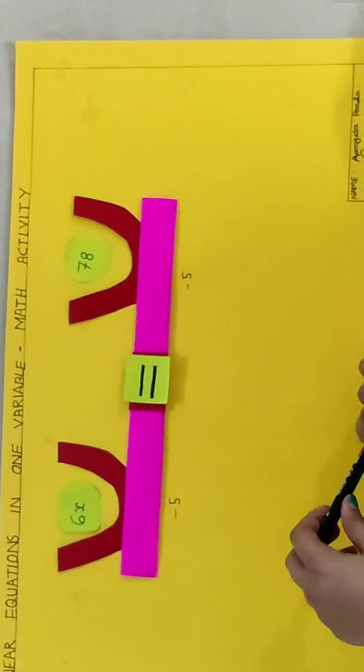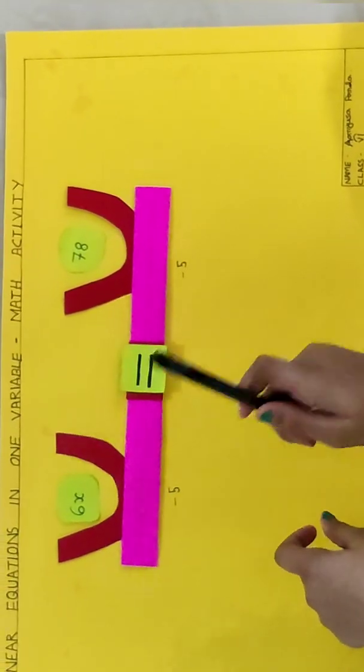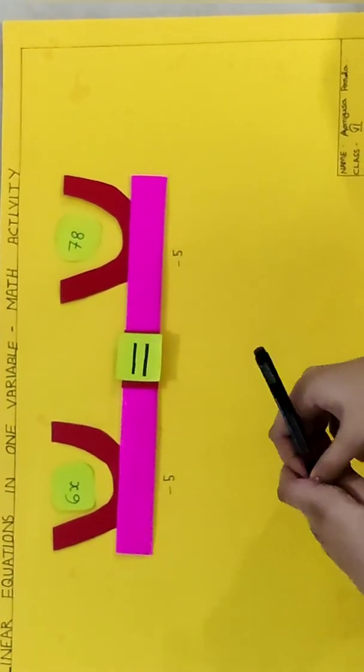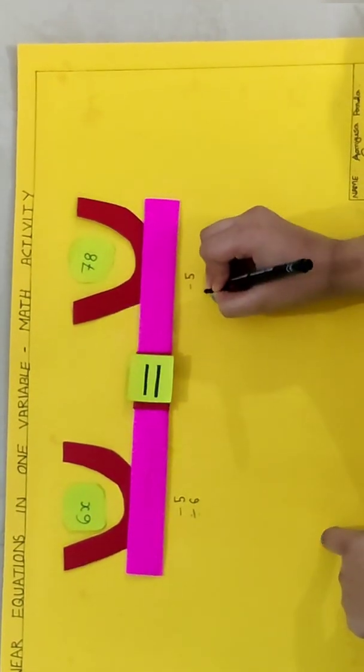But still we have not got the value of x. We have got the value of 6x which is 78. So to get the value of x, we have to divide 6 on both the sides.